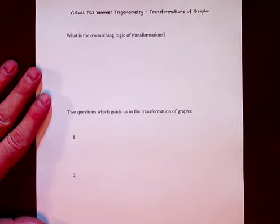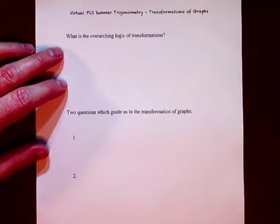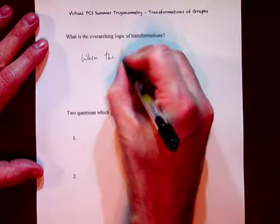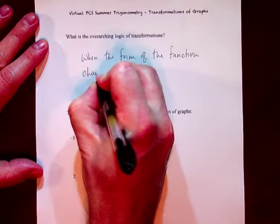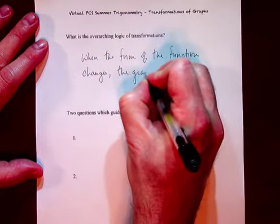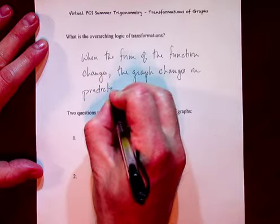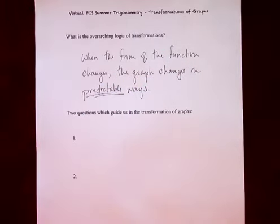What is the overarching logic of transformations? What are we assuming when we do transformations? That is: when the form of the function changes, the graph changes in predictable ways. An emphasis on predictable ways. Some people are confused by transformations, but you don't need a shaman and a Ouija board to figure it out. It actually is really straightforward if you know what questions to ask.